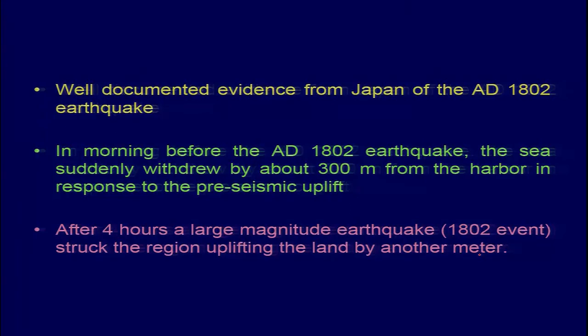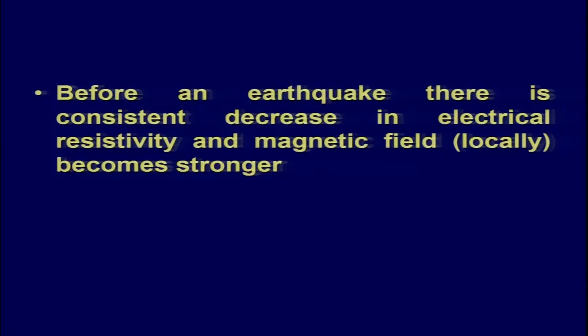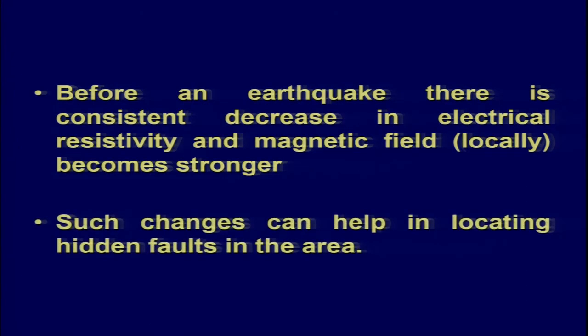We will discuss the Andaman subsidence in a future lecture on tsunamis. Before an earthquake there is a consistent decrease in electrical resistivity — this is another important parameter which researchers have tried to record — and the magnetic field also becomes locally very strong. Such changes can help in locating hidden faults in an area.